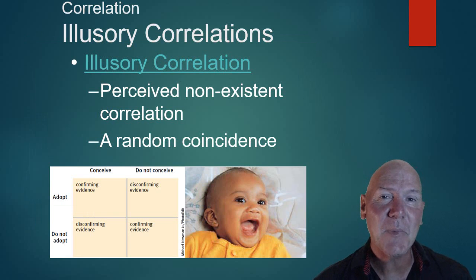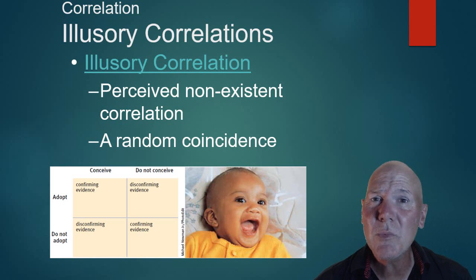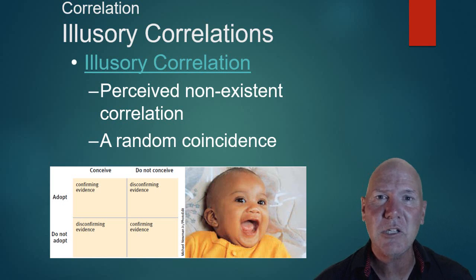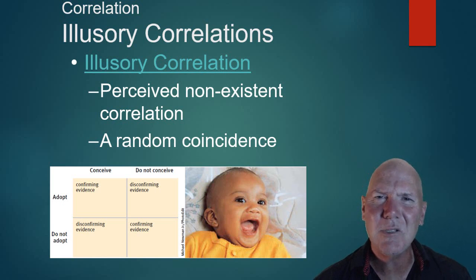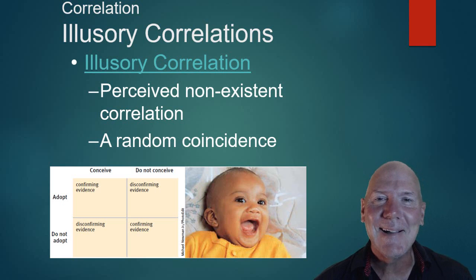There are also illusory correlations that people fall prey to — where we think there's a correlation, but there actually isn't one. Like perhaps stepping on a crack and breaking your mother's back. We naturally like to look for order and patterns, as we discussed in Part 1, which makes us vulnerable to seeing correlations that don't exist.